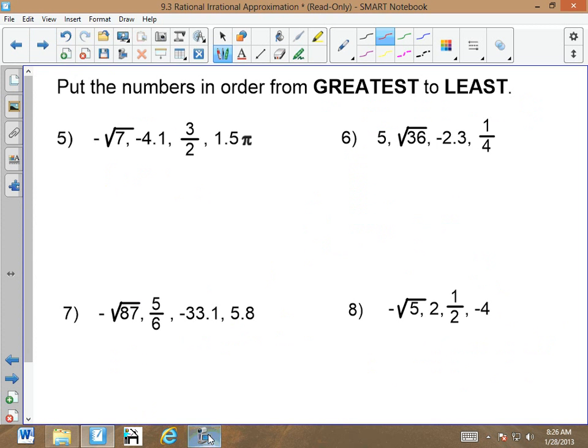Now, here, they want to go from greatest to least. So, we're going to go from largest, greatest means largest. We're going to go from biggest to smallest. Again, we're going to convert these to decimals. Now, this is negative square root of 7. So, in my calculator, I go negative square root of 7 equals. Hit my SD button. It gives me negative 2.65. Negative 4.1. 3 over 2. 3 divided by 2 equals SD, 1.5. And then, we have 1.5. And then, we have 3.14.